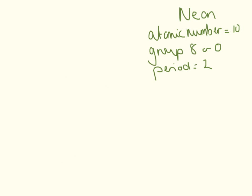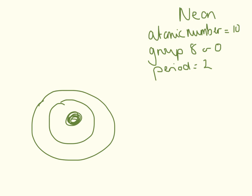Next we're going to draw neon. Its atomic number is 10, which means it has 10 electrons. Depending on your periodic table it's either group eight or group zero — this just means it has a full outer shell — and it's in period two, so it has two shells. I draw 10 electrons: one, two in the first shell, then three through ten in the second shell, giving a full outer shell of eight.